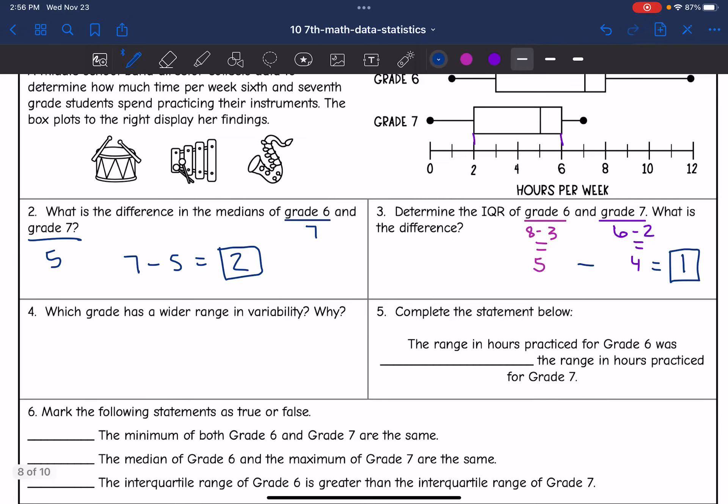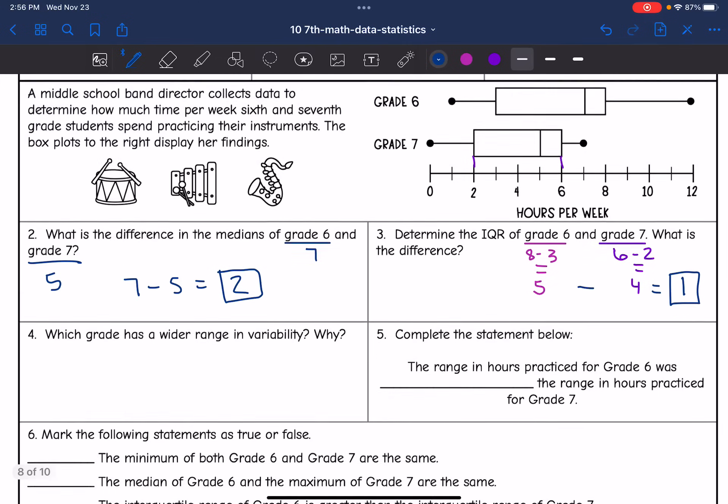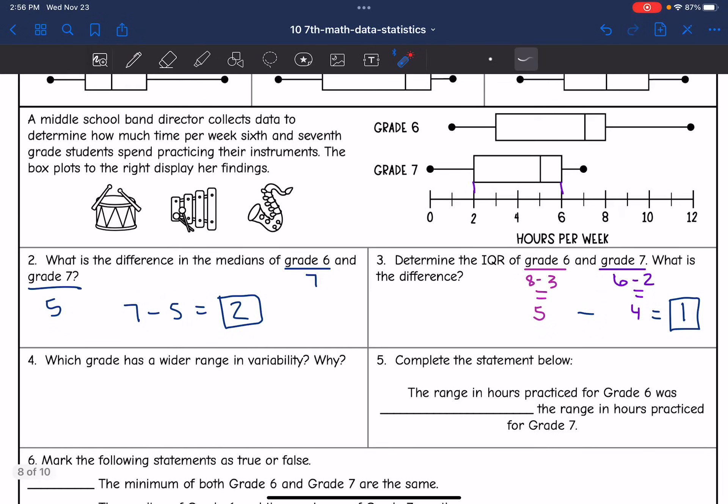And then four says, which grade has a wider range in variability and why? So you can visually see that grade six is spreading more than grade seven.